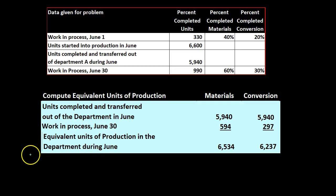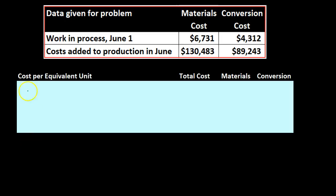What we're talking about here are units as opposed to costs. When we consider the journal entries we want to consider dollars. We're thinking about dollars and we therefore need to do some type of conversion between units and costs.